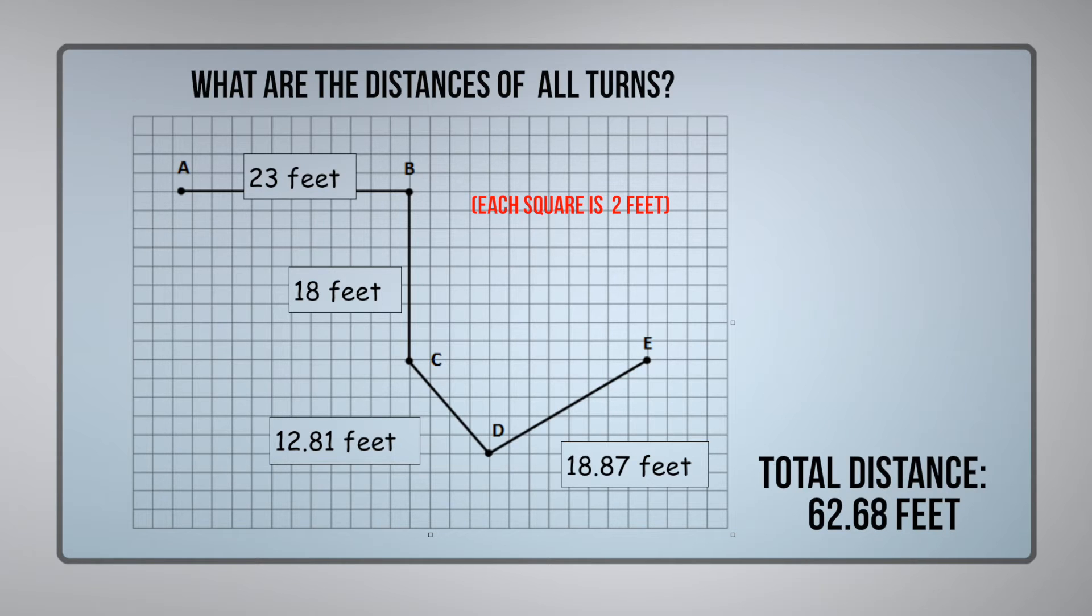we see that it is 23 feet between points A and B, between B and C is 18 feet, between C and D is 12.81 feet, and between D and E is 18.87 feet, which gives us a total of 62.68 feet.